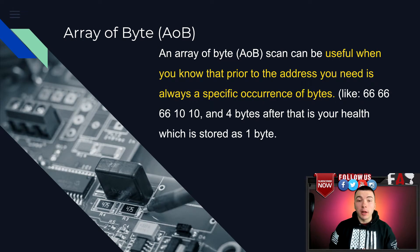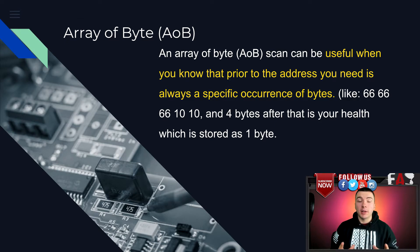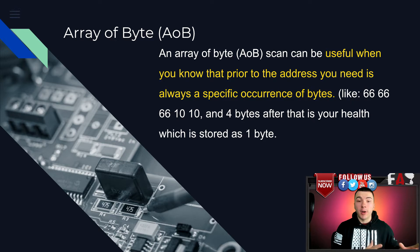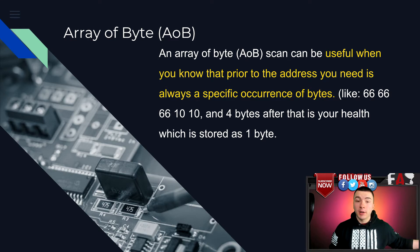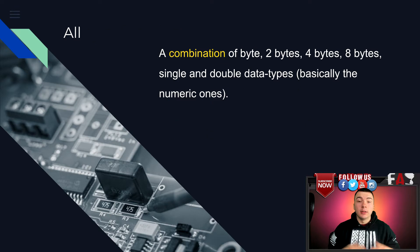Next up on the list is the array of byte scan, also known as an AOB scan. You can use this scan if you know the exact bytes that you want to scan for. This is useful if you want to narrow down results really fast. For example, if you have your health value stored in certain bytes all the time, you can just search for those array of bytes and it will pull up your health right next to it, usually with just one scan.